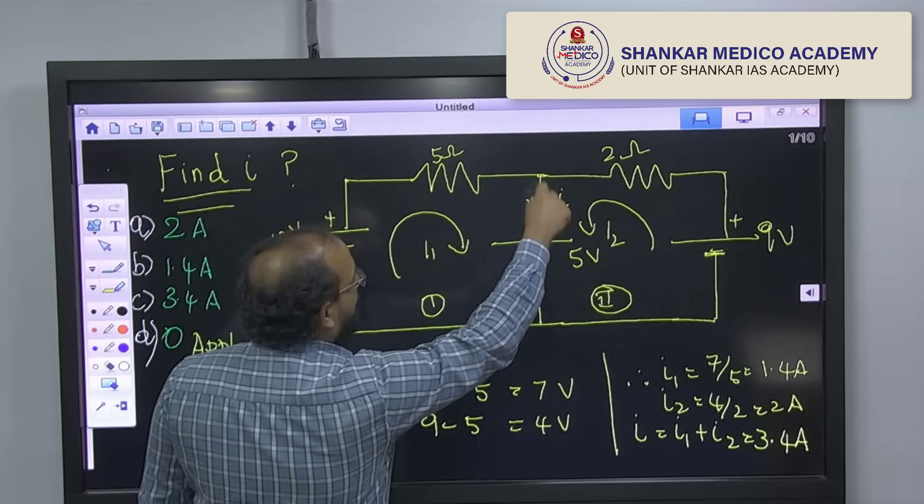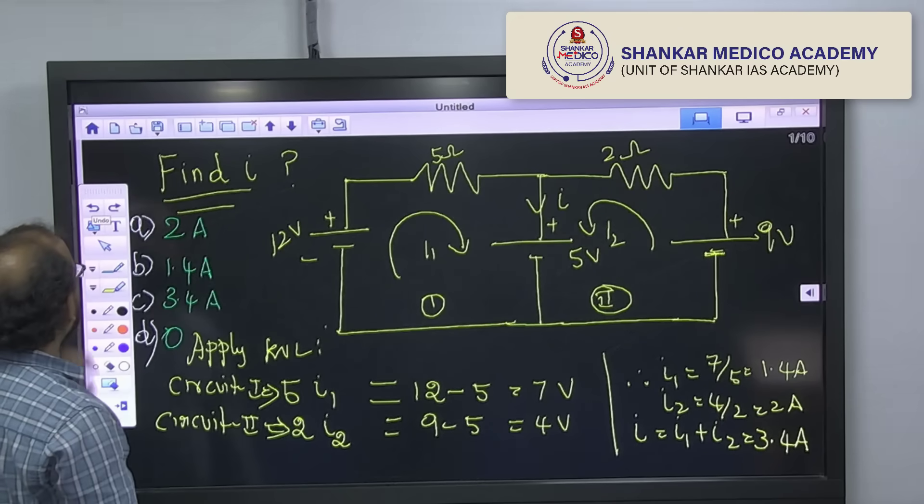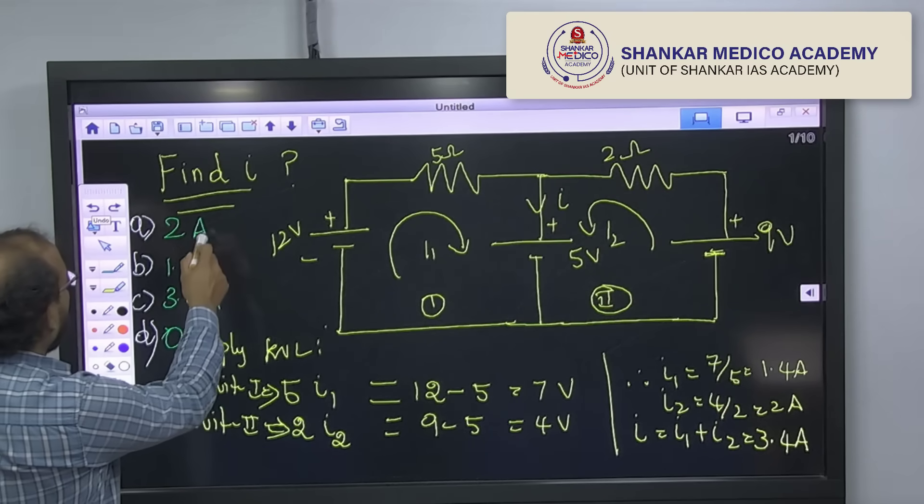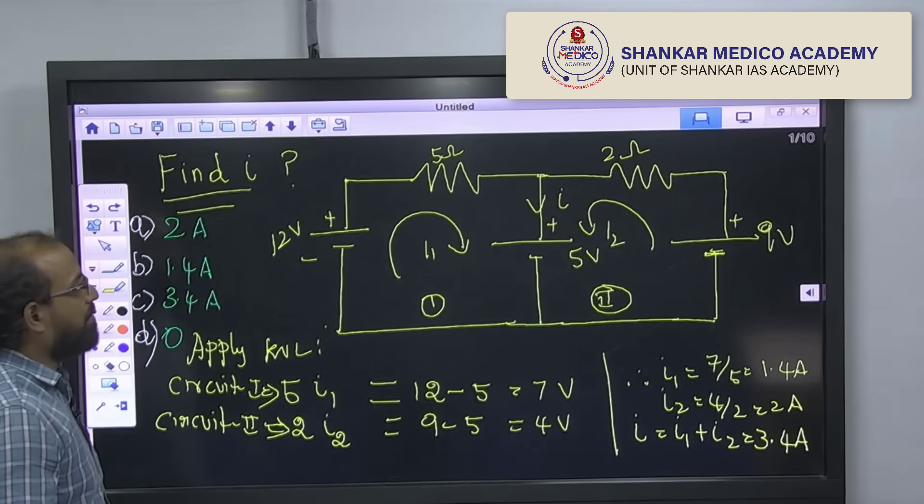In this 5 volt, what is the current? So, options given, just see the options are 2 ampere, 1.4 ampere, 3.4 ampere and 0 ampere.